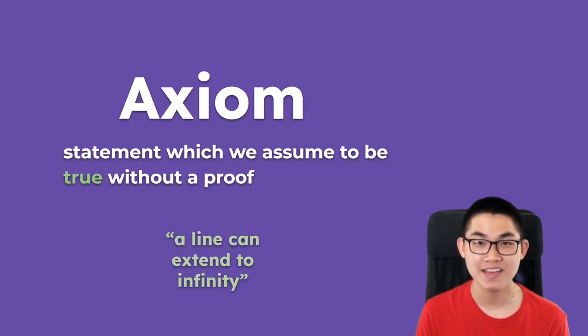And the next one that we have is an axiom. And an axiom is really basic. It's just a statement that we assume to be true. And we don't need to prove it, we just say, here is a statement and just assume that this is true. So for example, a line can extend to infinity is an axiom.